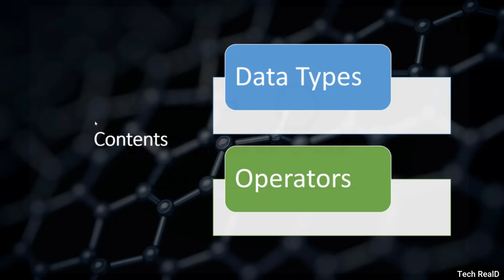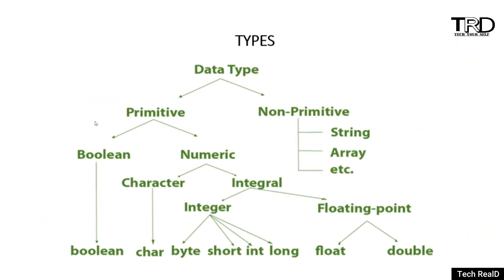So about data types and operators. Here is a flowchart for the types of data available in C++, that is primitive and non-primitive. You have seen that we have used data types like int, char, long, float, double — all these are the types of data available. For character we use char; for integer types we can use byte, short, int, long. These are the different types; for float or double, these kinds of data types we can use. We will see one by one what these types mean.